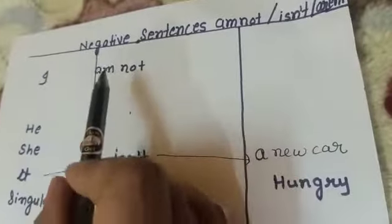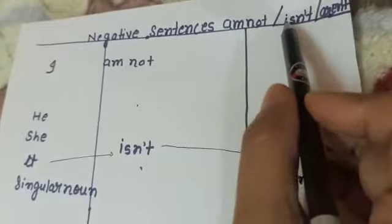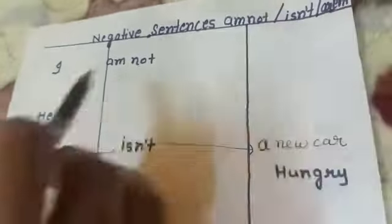For negative sentences, we use am not, isn't, aren't. So look here.